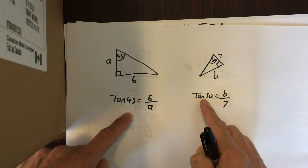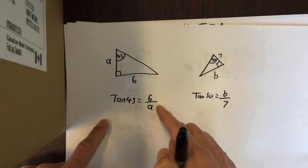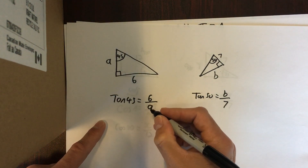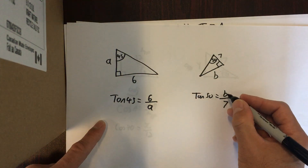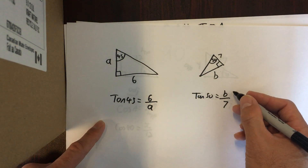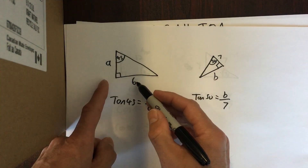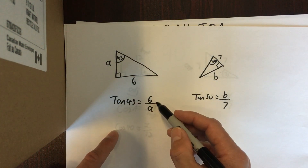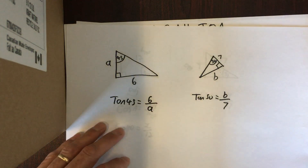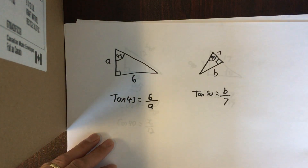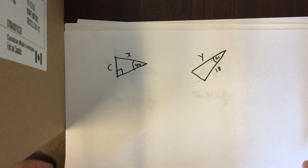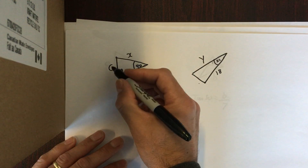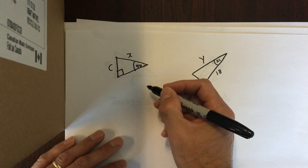Notice the difference between these two examples. The similarity is we're going to take the tan of each of the angles. However, the difference is: on one side we're looking for the variable on the bottom, and on the other side we're looking for the variable on top. It's very important that you identify which side is opposite and which is adjacent, and that you place the opposite on top and the adjacent on the bottom.